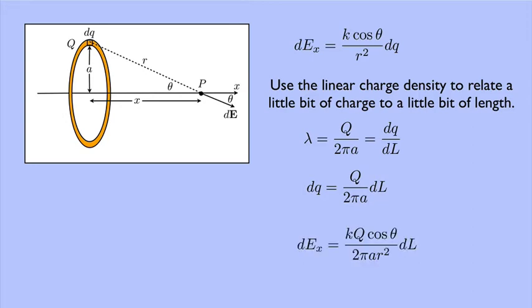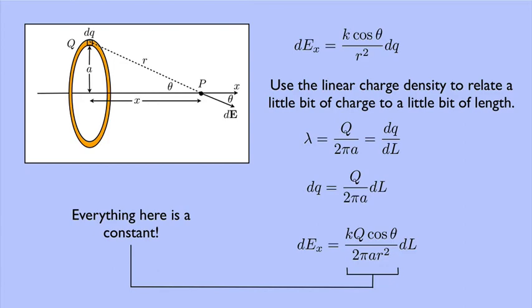So, I get the x component of a tiny little bit of electric field, dE, to be k q cosine theta over 2 pi a r squared dl. Now, if you notice, everything in front of the dl is a constant. That means we're ready to integrate.